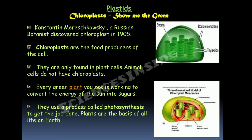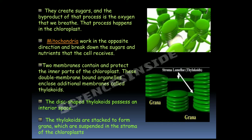Plants are the basis of life on Earth — they create sugars and the byproduct of that process is the oxygen we breathe. That process happens in chloroplasts, while mitochondria work in the opposite direction and break down sugars. Two membranes contain and protect the inner parts of the chloroplast. These double membrane-bound organelles enclose additional membranes called thylakoids. The disc-shaped thylakoids are stacked to form grana, which are suspended in the stroma of the chloroplast.